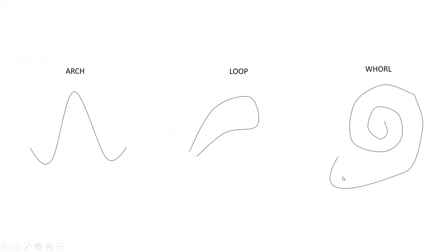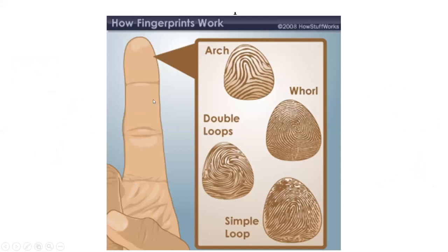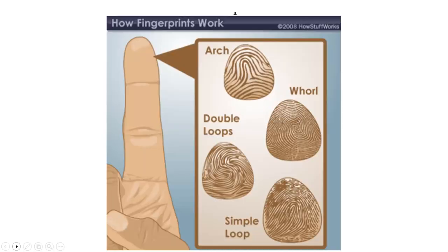We're going to look at an illustration of a fingerprint. When you look at the center, you see that this is an arch, this is a whirl, and this is a loop. Now keep in mind, you will see some variation. There can be mixed fingerprints — you can see double loops, tented arches, and a pocket loop.